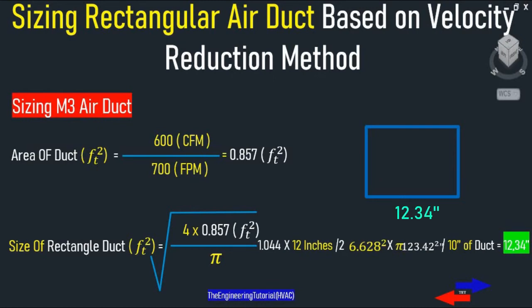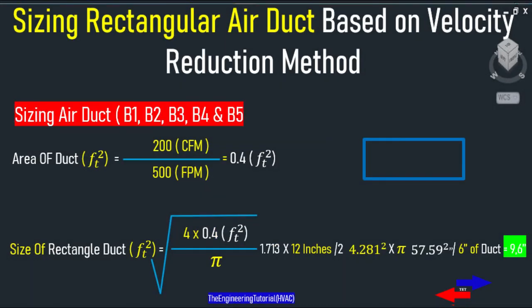For all branches the same method should be done. Let's say the height of the branch needs to be 6 inches and its width 9.6 inches. You can simply divide the total area of the branch over the height of the branch to get the size — for example, a result of 9.6 inches by 6 inches.